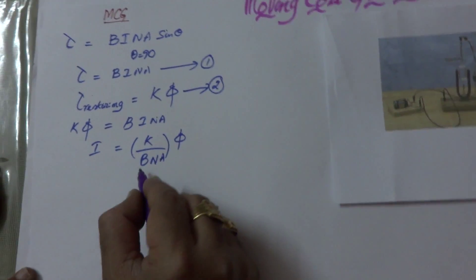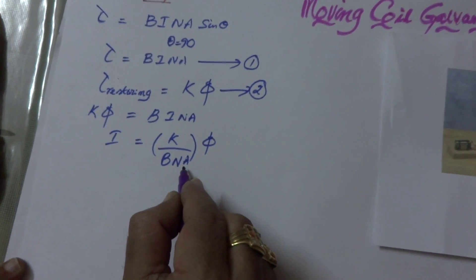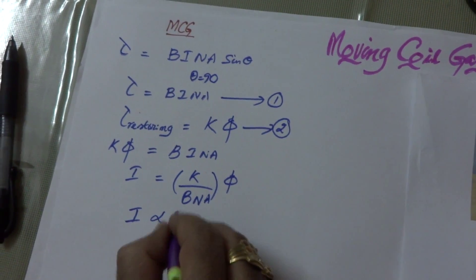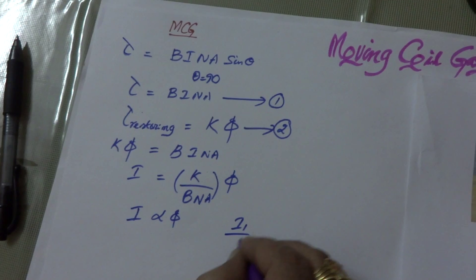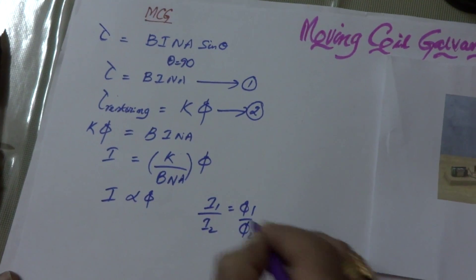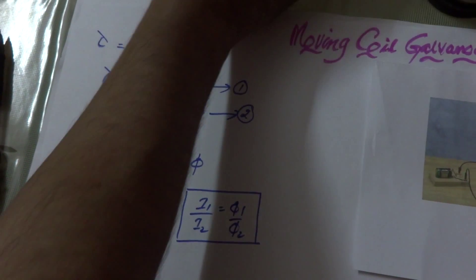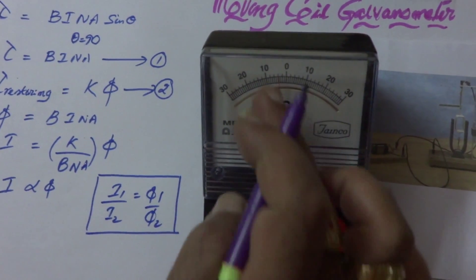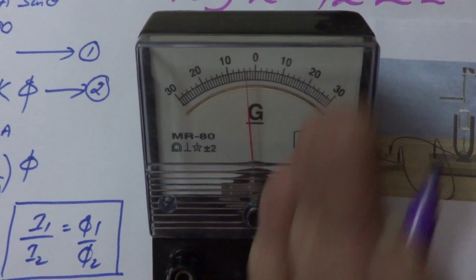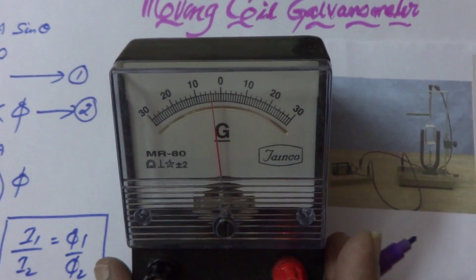K is already constant. B is the magnetic field, N is the number of turns, and A is the area of the coil. Now you can say that I is directly proportional to phi. So you can write I1 by I2 is equal to phi1 by phi2, and we can calibrate this galvanometer with the help of a known current. By reading the shift, or by reading phi, you can find out what current is passing through the circuit.